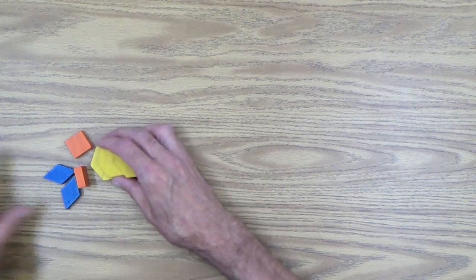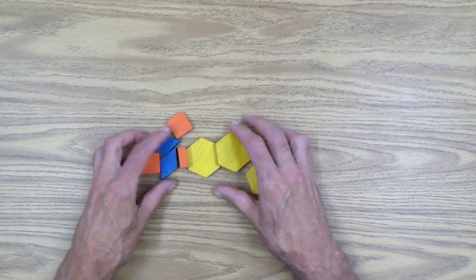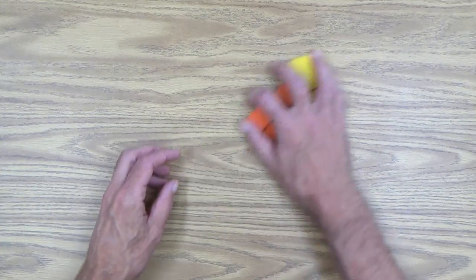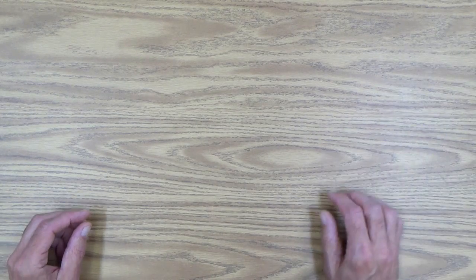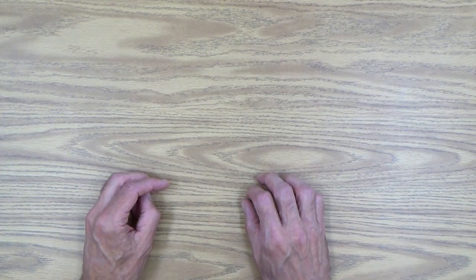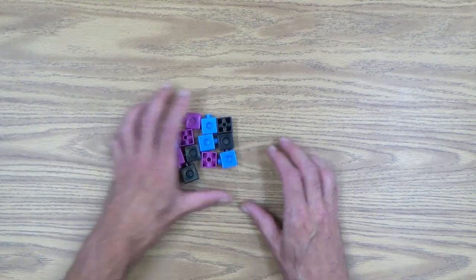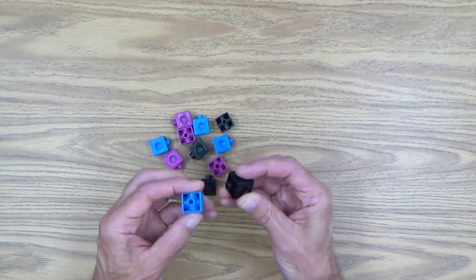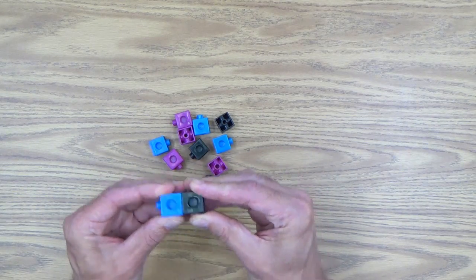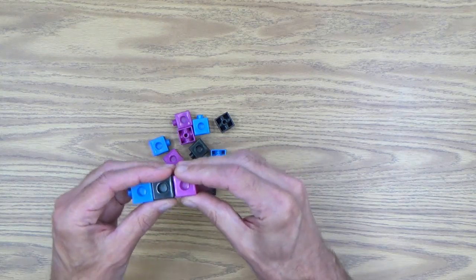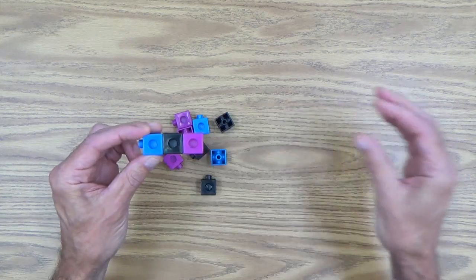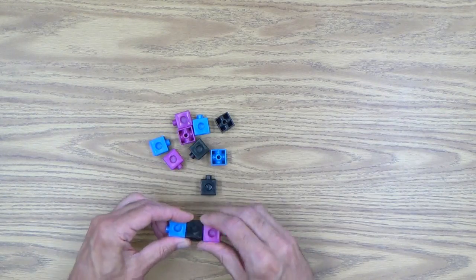Pattern blocks. You need a few pattern blocks or a set of pattern blocks to work with. And lacing beads. These are called unifix cubes. They attach together, and you can make long what they call trains of unifix cubes together.